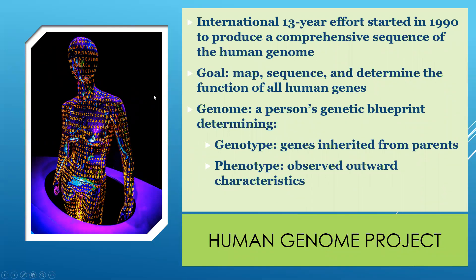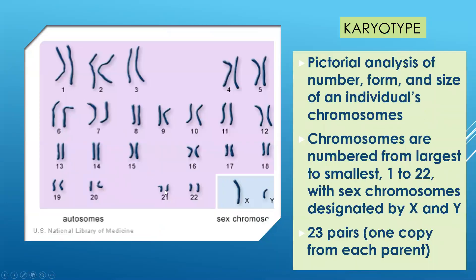In the 1990s they were actually able to map the entire genome, but they don't know exactly what every part does — they're still finding different portions and parts of genes that are responsible for certain disease processes. When talking about a genome, that's the person's genetic blueprint. Your genotype is the genes that you inherit from your parents, and your phenotype is what is outwardly observed — those are your characteristics that are outwardly observed. We have a total of 46 chromosomes, which are in 23 pairs, and we get one copy from each parent. We always get an X from our mother, and depending on whether we get an X or a Y from our father determines if we are male or female.